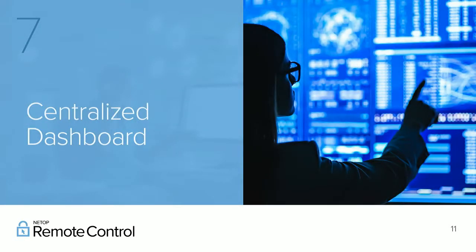Number seven is a centralized dashboard. Centralization is important — just like with centralized authentication, you want the ability to manage and monitor your remote desktop tools from a central dashboard or console. When you're supporting a few machines, managing them individually is easy. But as you begin to support tens, hundreds, thousands, or even hundreds of thousands of devices, having administrative tools available from a central console is critical — it's not just more efficient but also more secure, giving you one point of control.